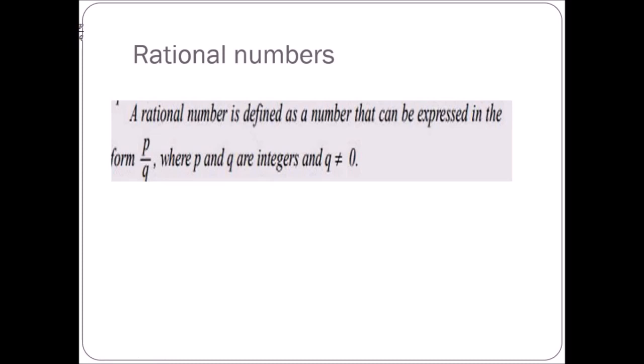Here, P is called the numerator and Q is known as the denominator. There are two necessary conditions: P and Q should be integers, and the denominator should not be zero. As we know, when a number is divided by zero it is undefined, so these two are the necessary conditions.